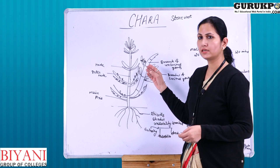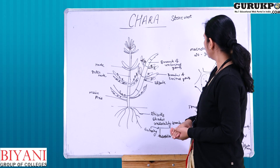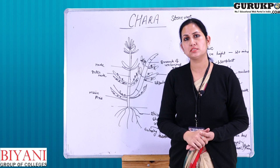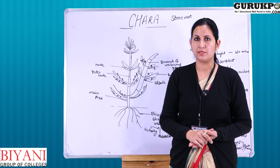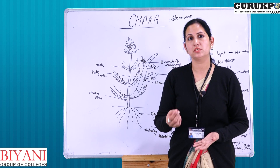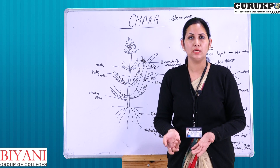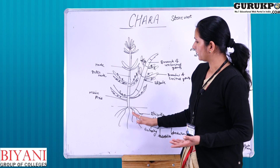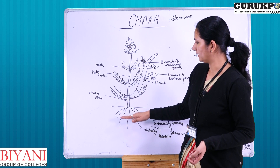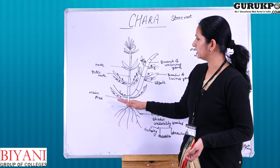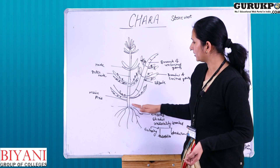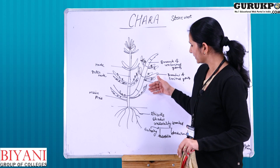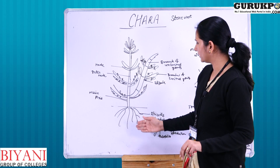Here I have drawn the diagram of Chara's plant body. It is 20 to 30 centimeters in height and sometimes reaches up to 120 centimeters. There are some species which are very small, only 1 to 2 centimeters. The main plant body is divided into two parts: the rhizoid and the main stem. The rhizoid is embedded in the wet soil and is cylindrical and unicellular.